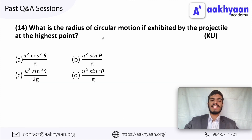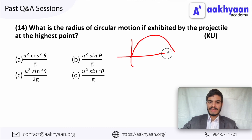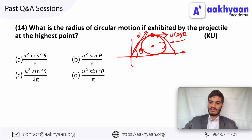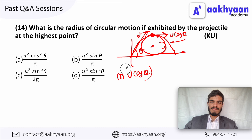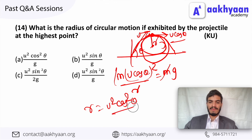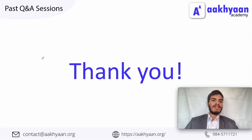In the next problem, what is the radius of the circular motion exhibited by a projectile at its highest point? At the highest point the velocity is u cos theta. For circular motion, the centripetal force equals the downward gravitational force: M v squared divided by R equals Mg. So M cancels, and R equals v squared divided by g equals u squared cos squared theta divided by g. This is the correct option.